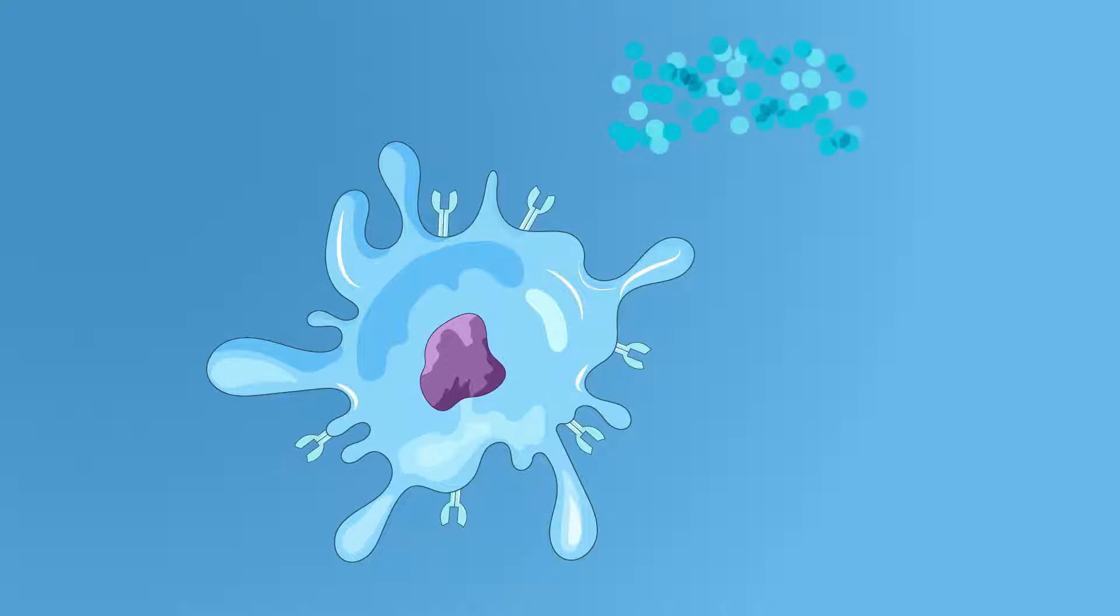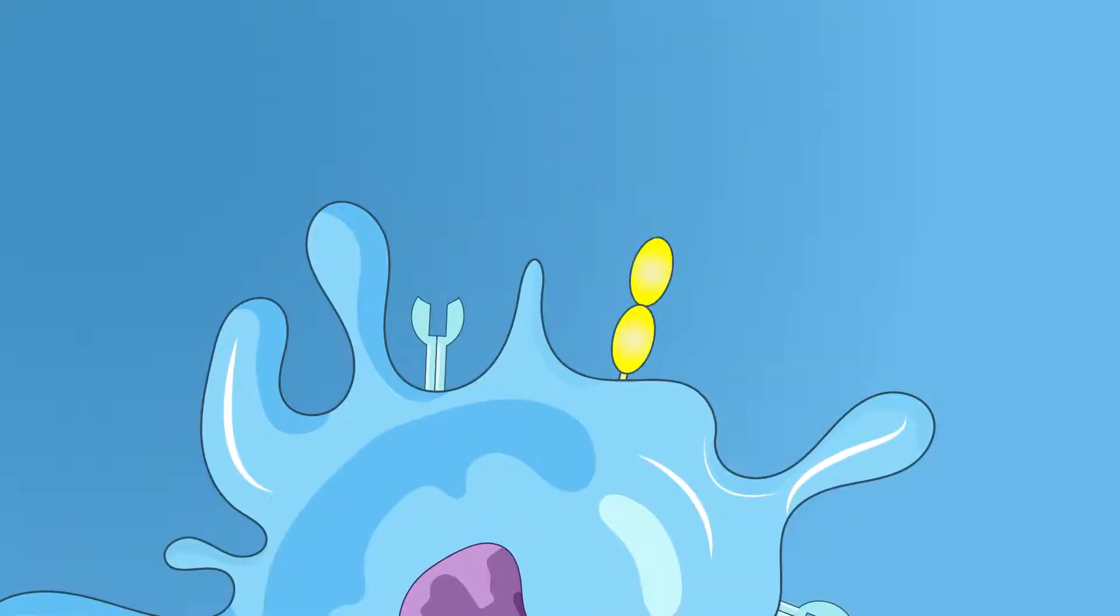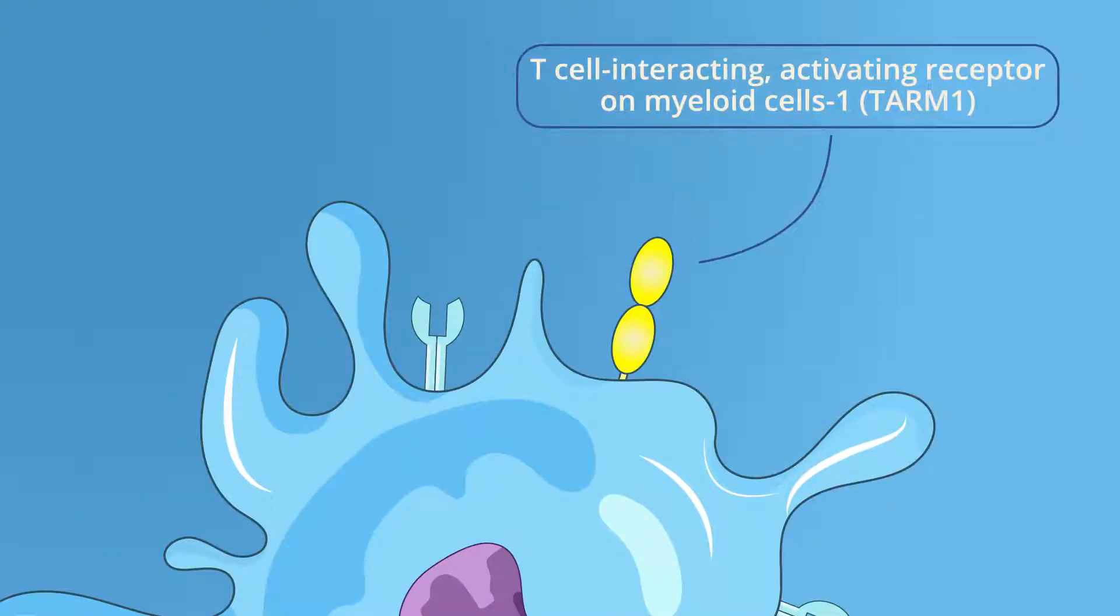These immune cells are equipped with certain receptor proteins that modulate the immune response. One such receptor protein is the T-cell-interacting activating receptor on myeloid cells 1, or TARM1.